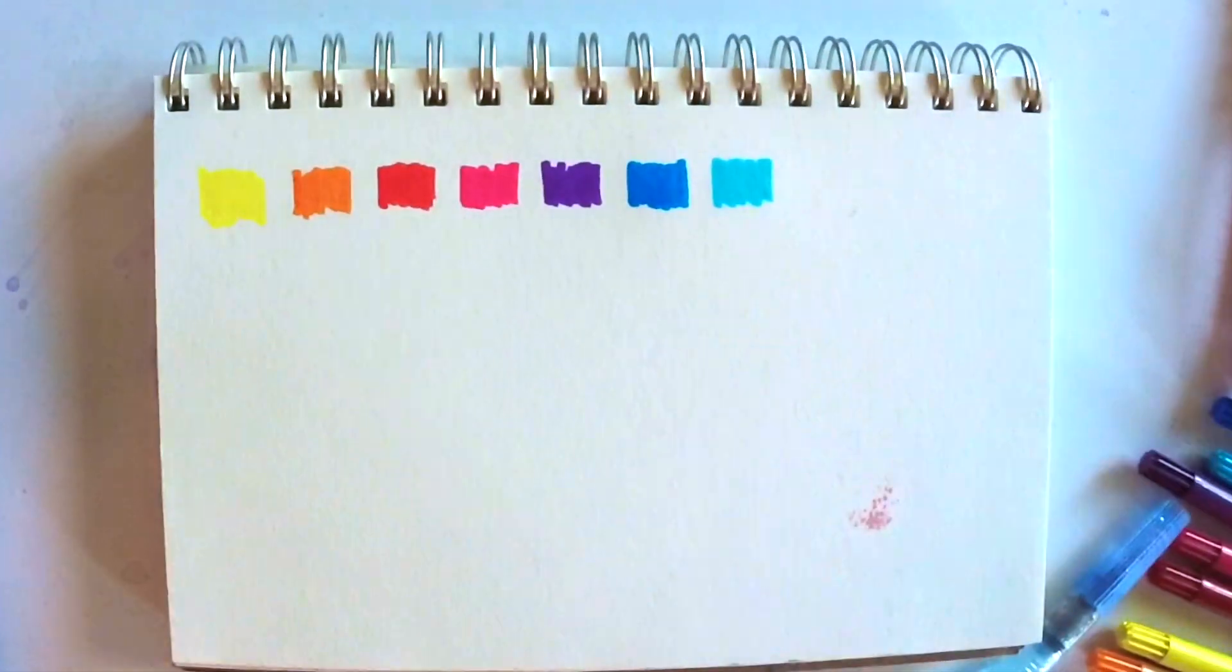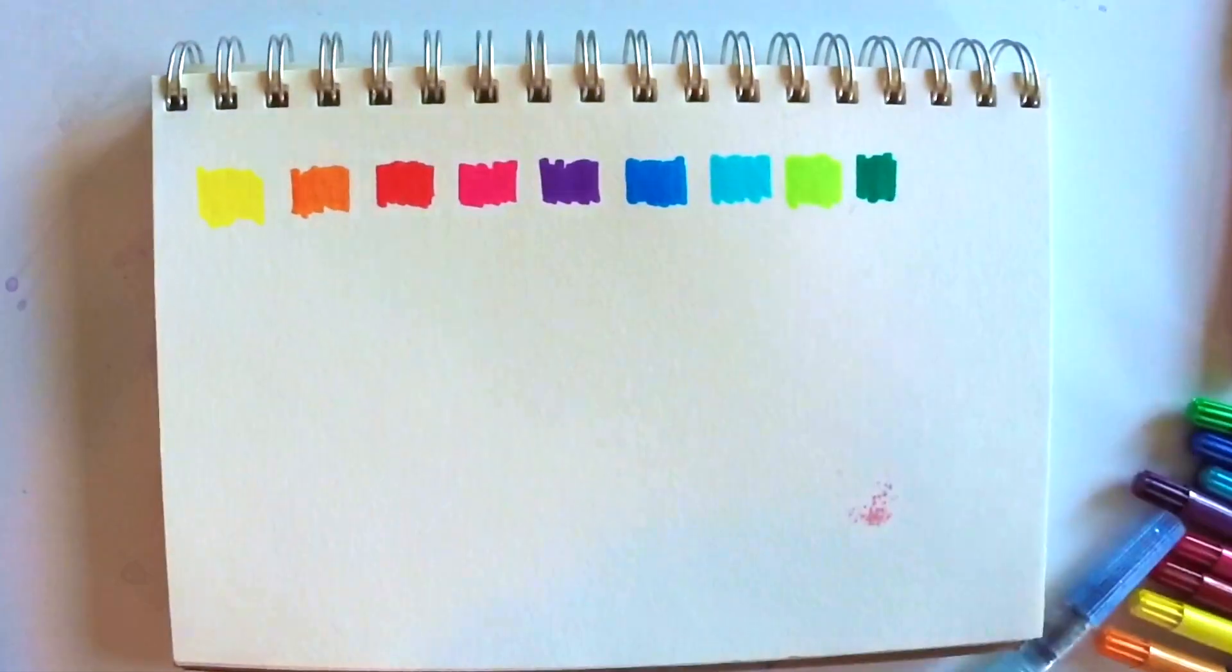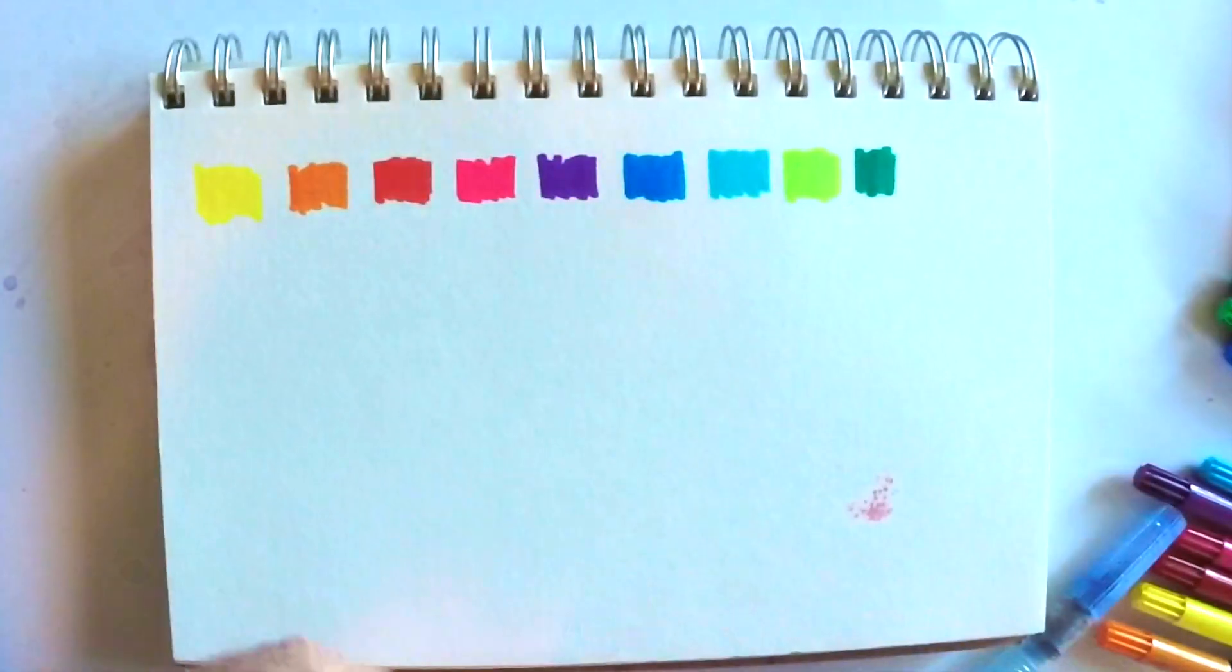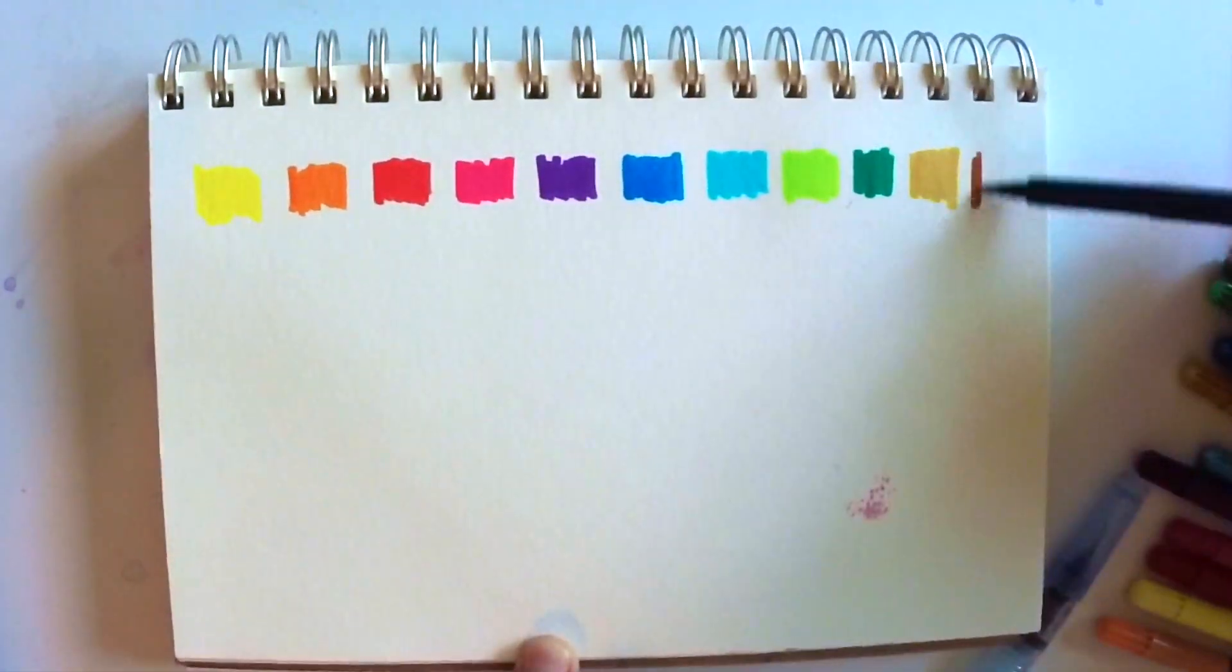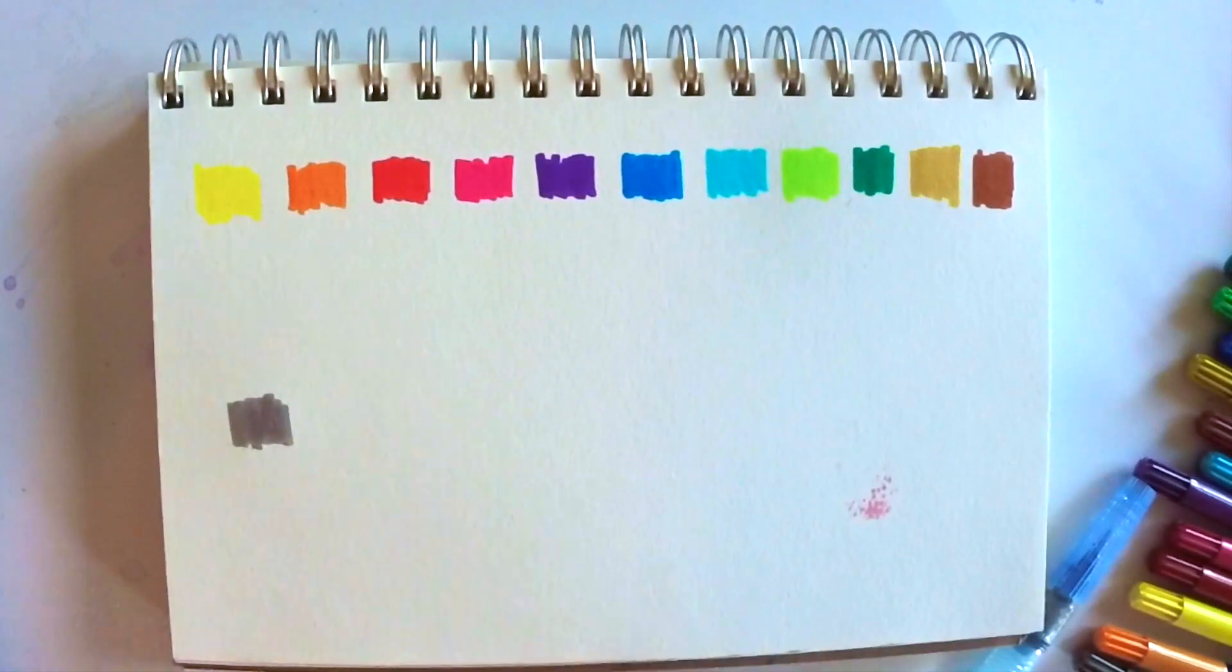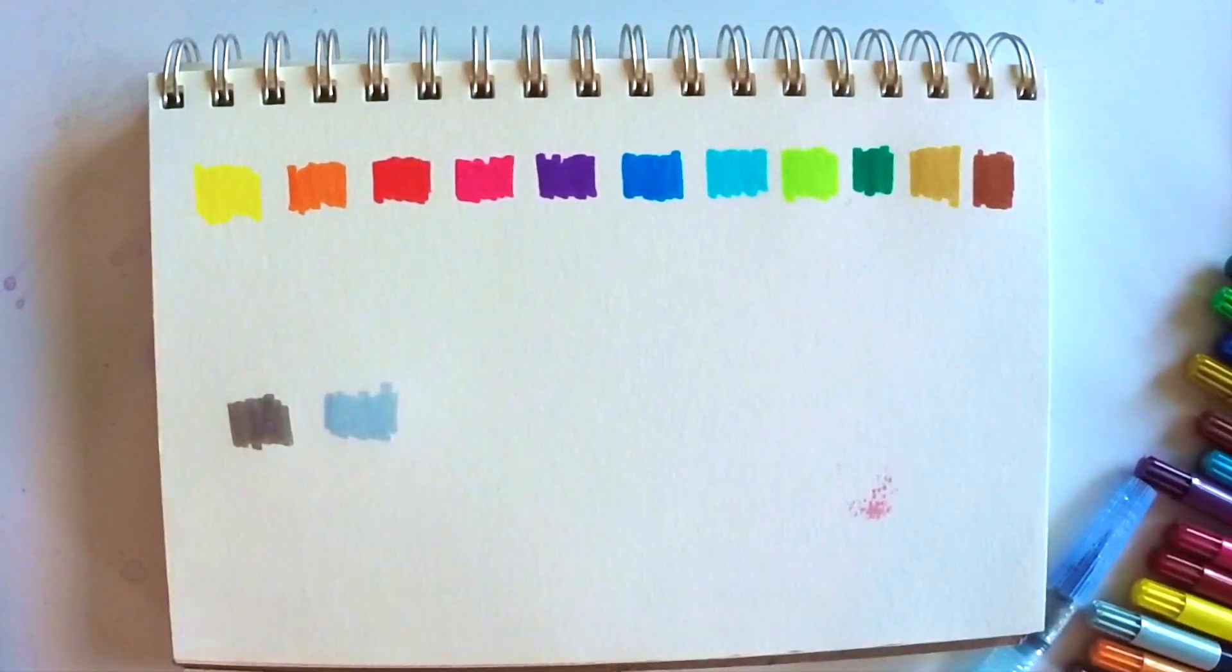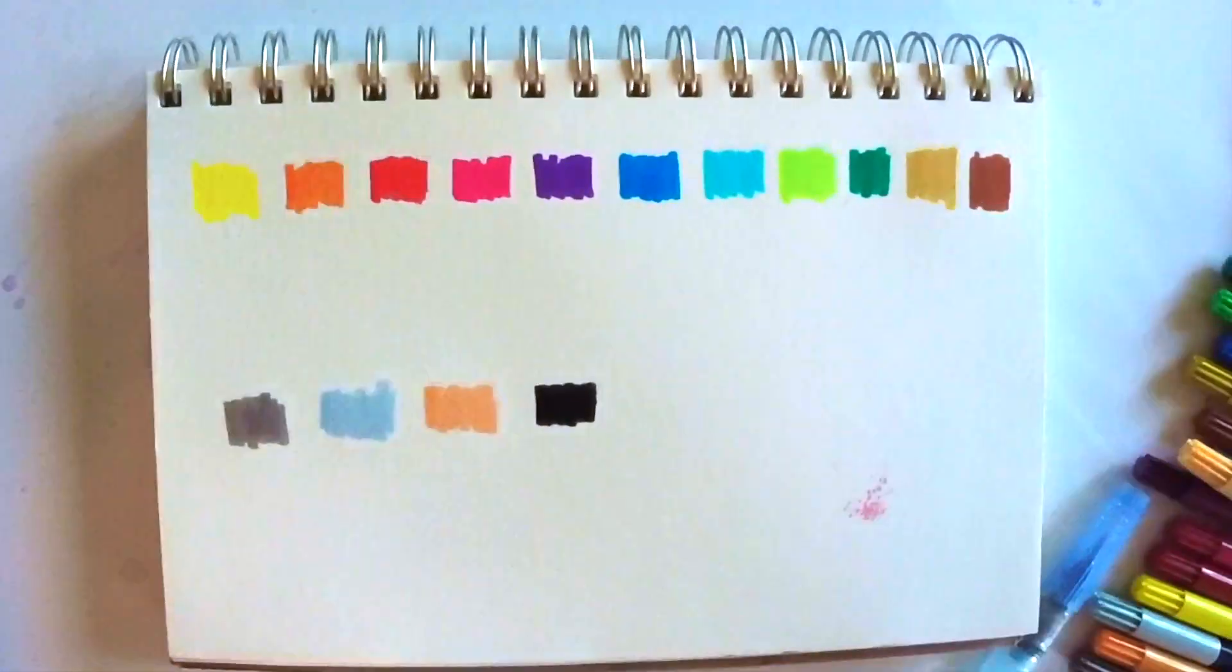So say you were doing adult coloring or whatever, you could just use these as a straight marker in that regard and apply the color like that. Or you could apply it and then wet it later and have some neat watercolor effects.